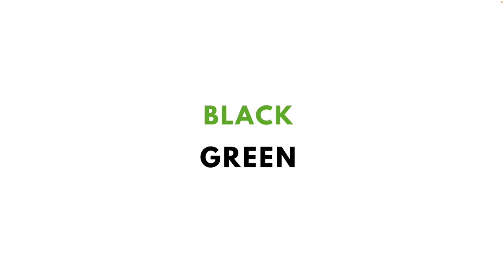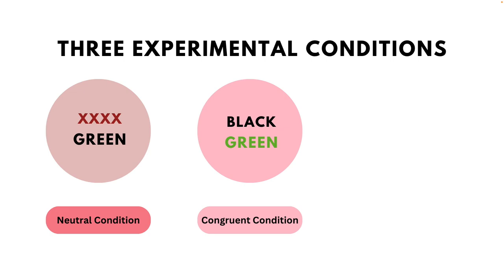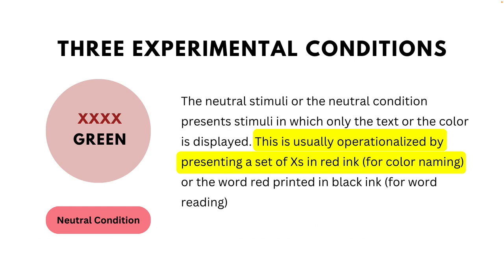The stimuli in the Stroop task falls under three categories or three conditions: the neutral condition or neutral stimuli, the congruent condition or congruent stimuli, and the incongruent condition or incongruent stimuli.